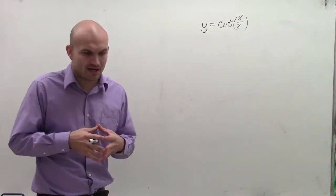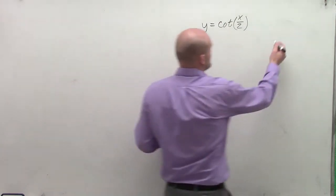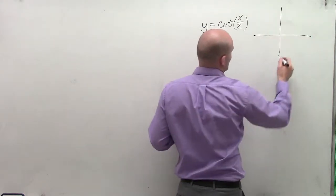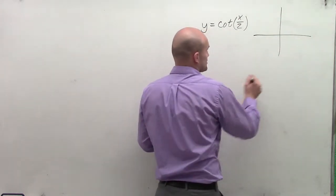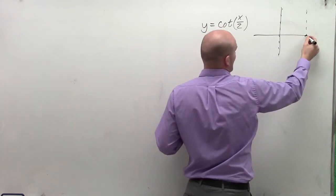So when graphing cotangent, first thing we need to do is understand what the cotangent graph looks like. So if I was just going to graph what we call an initial period, the cotangent graph has a vertical asymptote at 0 and also a vertical asymptote at pi.